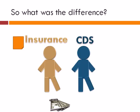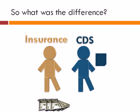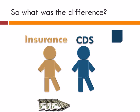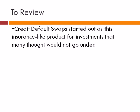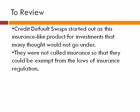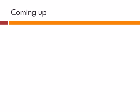But that was a secret. People on Wall Street didn't want to call it insurance, because if they did, it would be subject to federal and state laws. The difference between insurance and credit default swaps is that every time an insurance policy is issued, you have to have the cash reserve necessary to back it up. With credit default swaps, the cash reserve required before issuing these products was minimal. Credit default swaps started out as this insurance-like product for investments many thought would not go under — not called insurance so they could be exempt from insurance regulation, and not required to hold as many cash reserves, which placed them in a vulnerable situation.